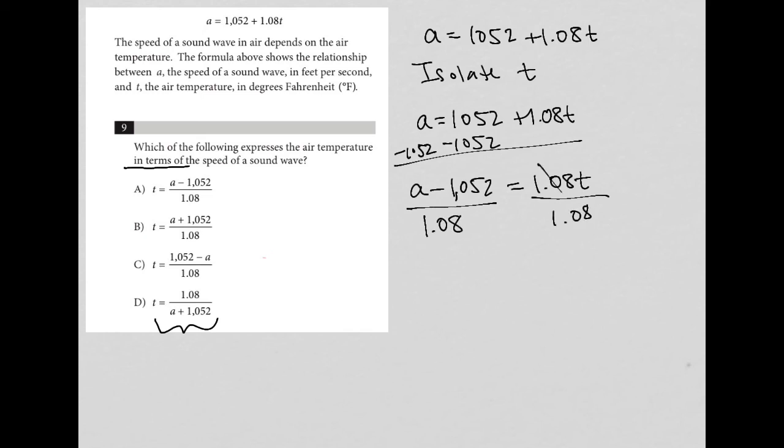Doing so on the right hand side crosses out the 1.08. So what I'm left with, if I put T in front instead of T on the right side of the equal sign, I'll get T equals A minus 1052, all divided by 1.08. And that is the same as, let's see, that's the same as answer choice A.